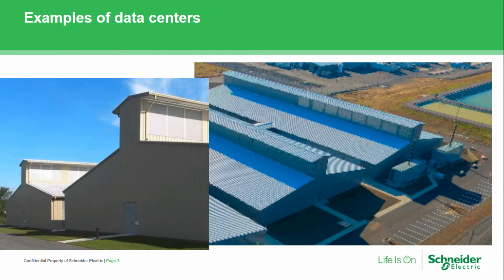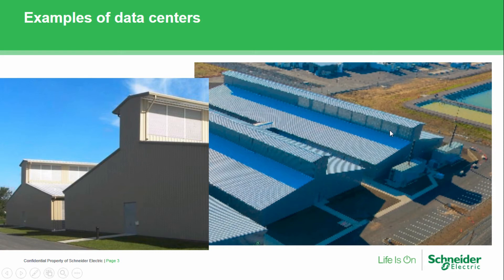Now I want to show you a different data center — this is known as the Yahoo chicken coop data center. It's unique in that it's shaped like a chicken coop. You'll notice the high-level structure at the top, called the cupola, where hot air from the exhaust of the servers comes out. Cool air comes in through the sides of the data center, goes through the servers, and after leaving the servers it's warm. That hot air naturally rises up and goes through the cupolas and out of those vents at the top — an interesting and relatively low-cost way of cooling servers, though it has to be built in the right climate.